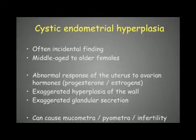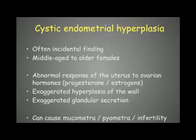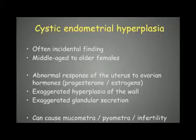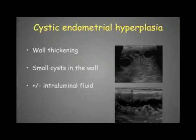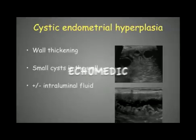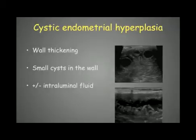The first pathology we can encounter is cystic endometrial hyperplasia (CEH), often an incidental finding in middle-aged to older female dogs. It is due to an abnormal response of the uterus to ovarian hormones, creating exaggerated hyperplasia of the wall with exaggerated glandular secretion. It can secondarily cause mucomitra, pyometra, and infertility. The typical ultrasonographic appearance is wall thickening with small cysts in the walls. Here we have two examples where the cysts are very large and clearly recognizable.